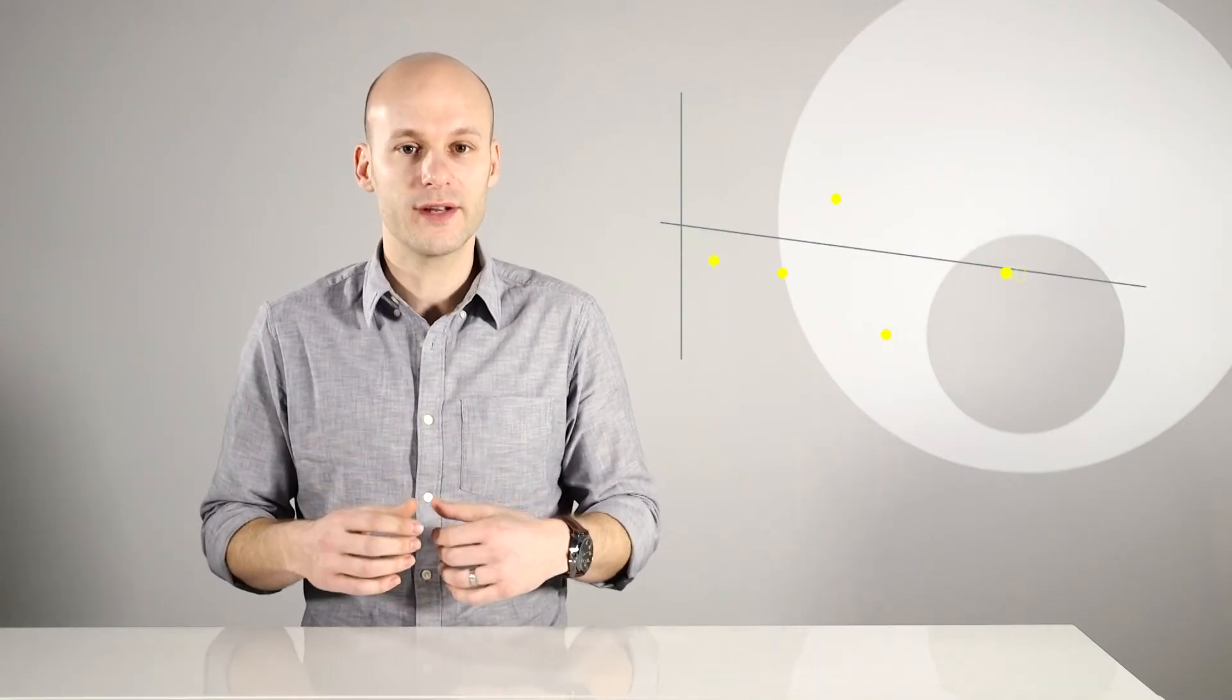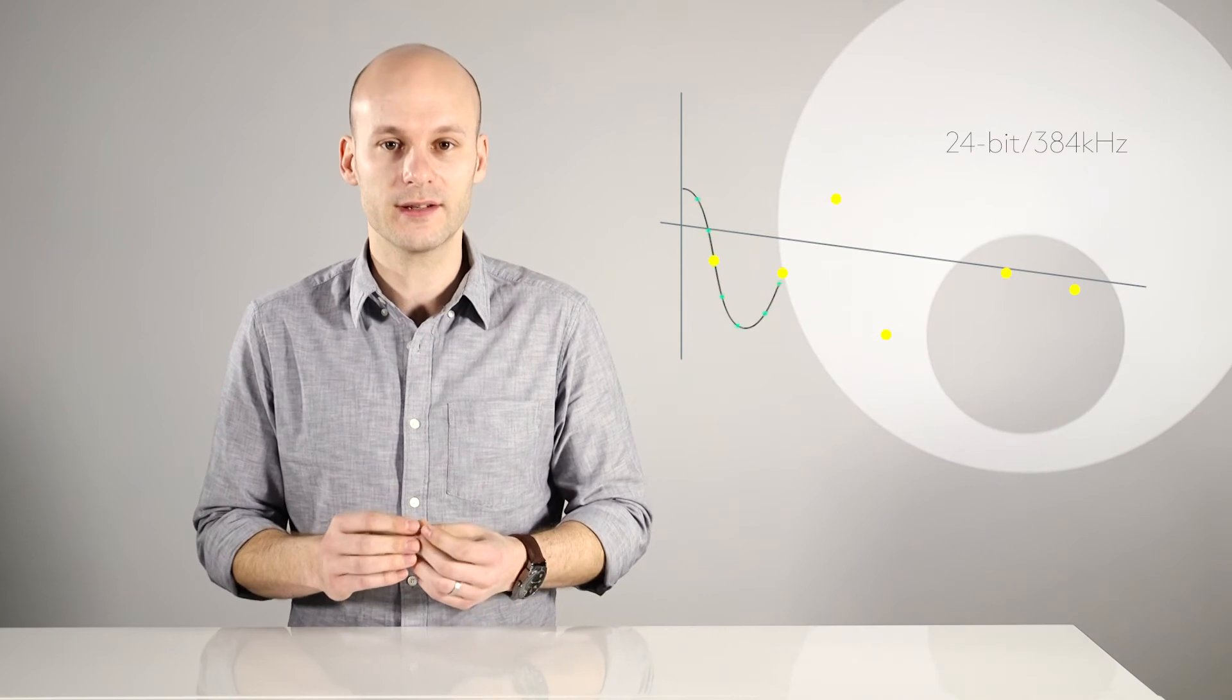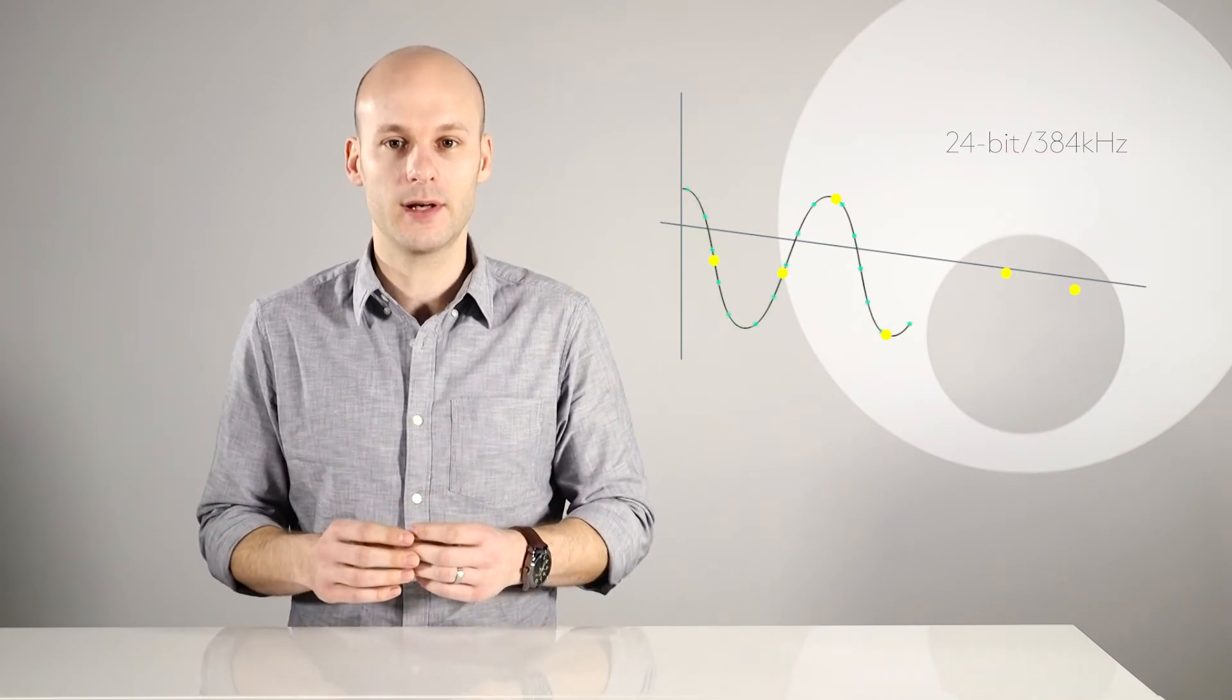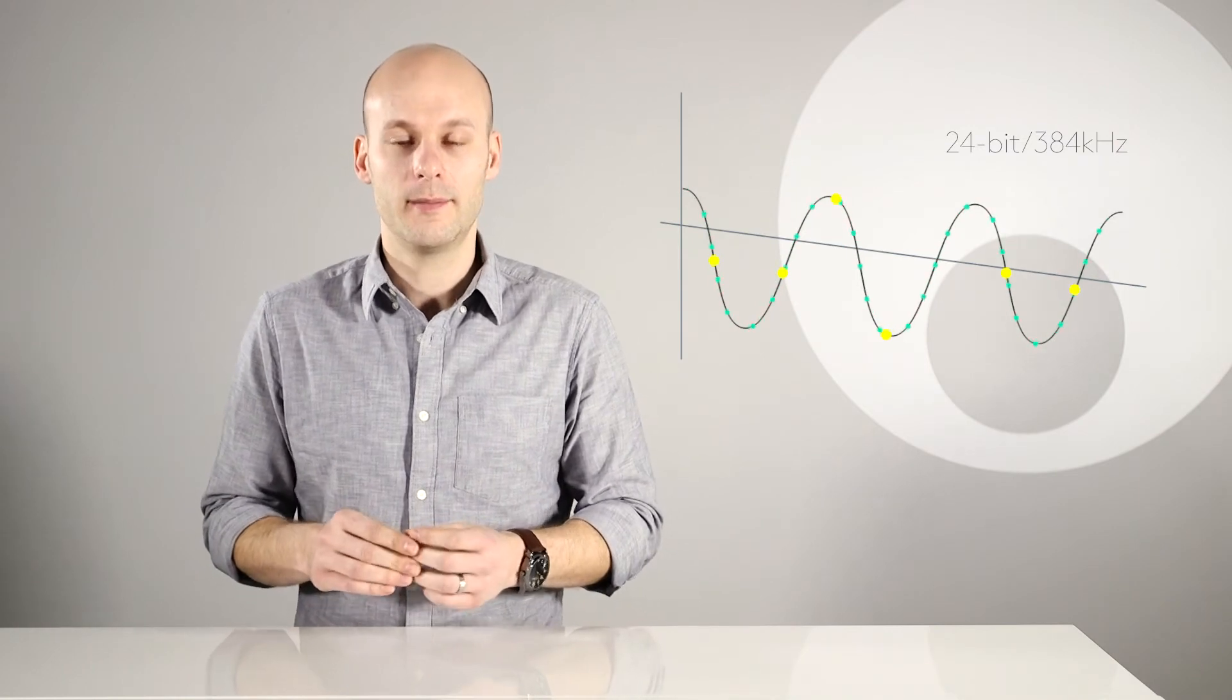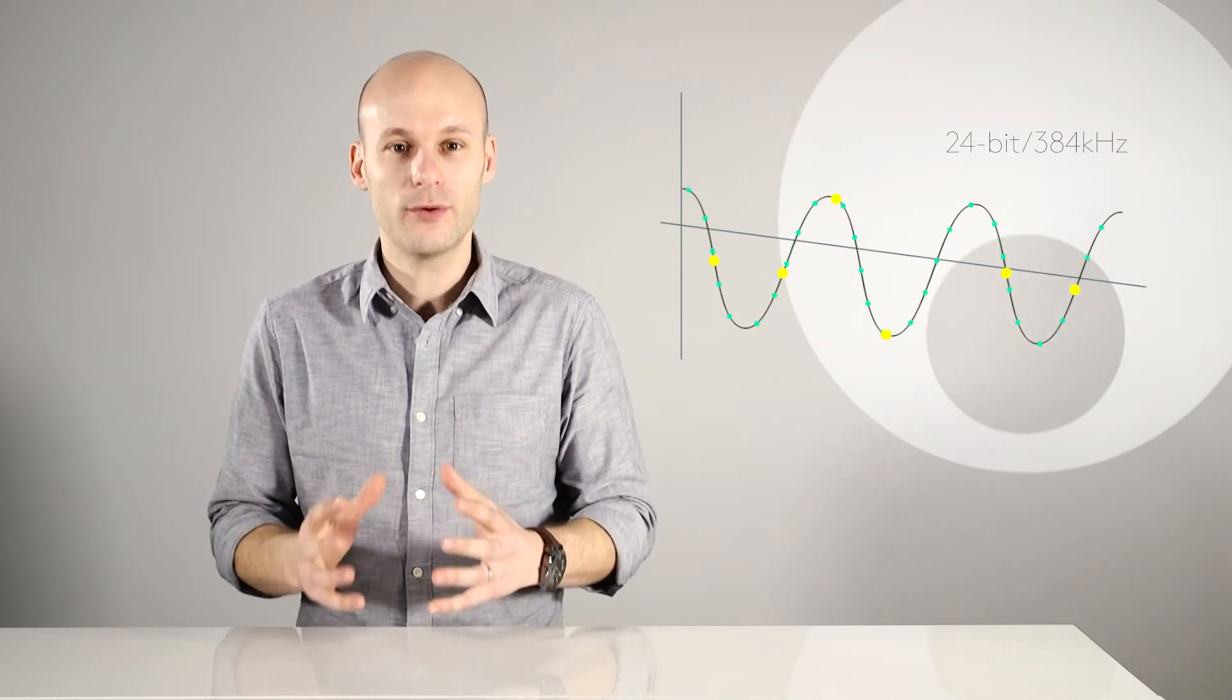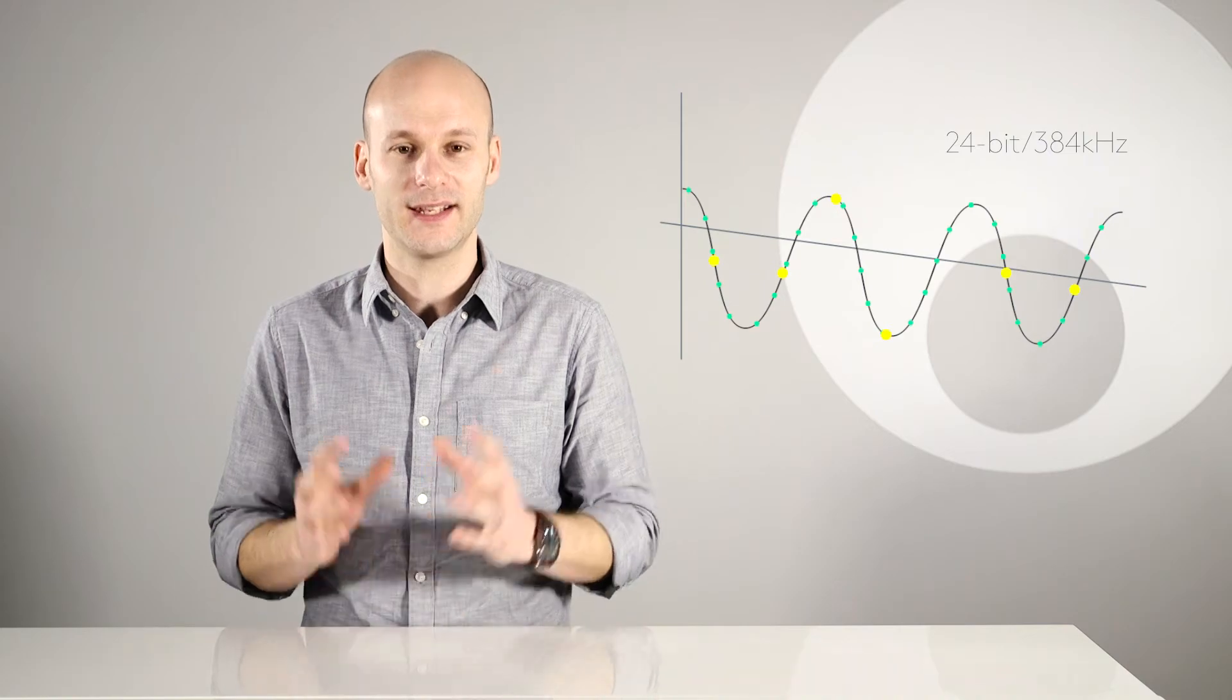But we don't stop there. The more snapshots or samples that we take result in a much smoother and more accurate recreation of the original analogue waveform because much more information is captured. So whereas a CD only has 44,100 samples every second the ATF system upsamples to 24-bit 384 kilohertz meaning that 384 thousand samples are taken every second.